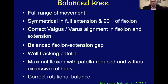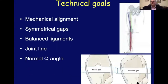So what is a balanced knee? Babazadeh in 2017 is probably the only person who has actually defined it. It should have a reasonably full range of movement, symmetrical in full extension and at 90 degrees of flexion, correct valgus and varus alignment in both flexion and extension, balanced gaps, a well-tracking patella, and maximal flexion with the patella reduced with correct rotational balance. The technical goals are to achieve proper mechanical alignment, symmetrical gaps, balanced ligaments, and to restore the joint line and the normal Q angle.